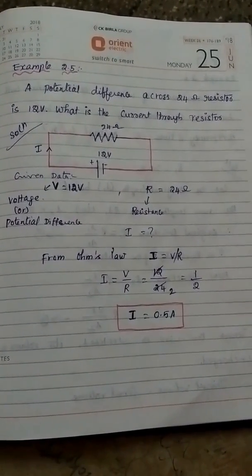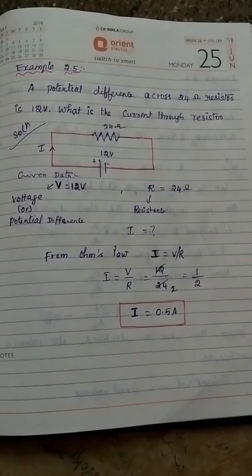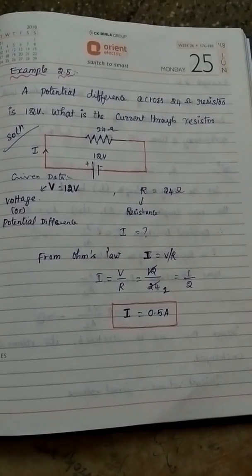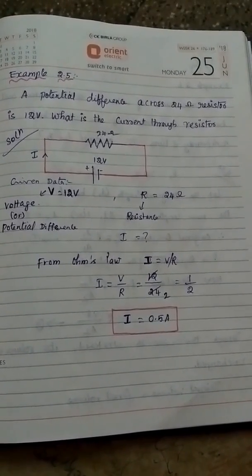Ohm's law is I equals V by R. So V value 12 divided by 24 - both cancel, 2 times 12, so 1 by 2. Therefore I equals 0.5 ampere.